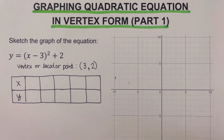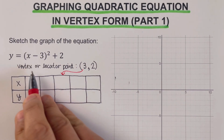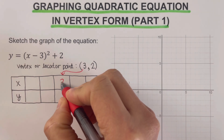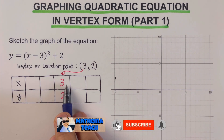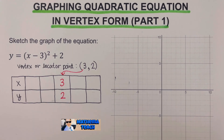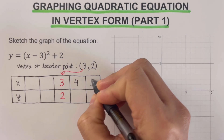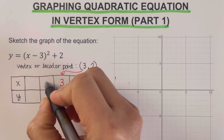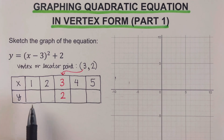Once we've drawn the table of values, the locator point (3, 2) is placed in the middle. So x equals 3 and y equals 2. We complete the table by adding x values to the right and left of the vertex: to the right we have 4 and 5, and to the left we have 2 and 1. Our next step is to determine the corresponding y values for these x values.